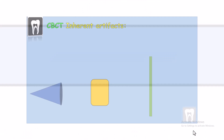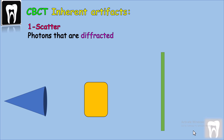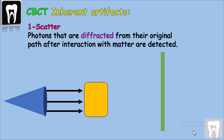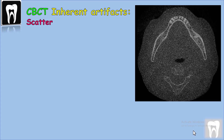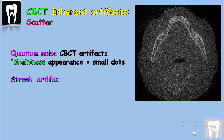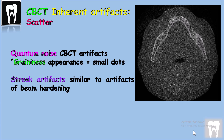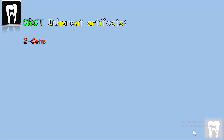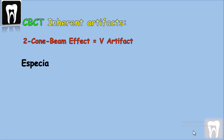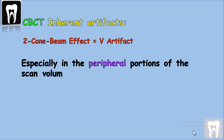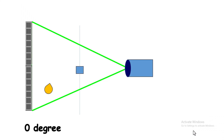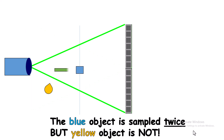Scanner artifact: x-ray photons are diffracted from their original path after interacting with the object. Because CBCT uses area detectors, the scattered photons are absorbed and decrease the image quality — we call this quantum noise. What we see are streak artifacts, or a grainy appearance with small dots on the image. The cone beam effect, or V-artifact, occurs because the beam is cone-shaped and the x-ray beam diverges as the x-ray tube rotates, showing two positions — zero degrees and 180 degrees.